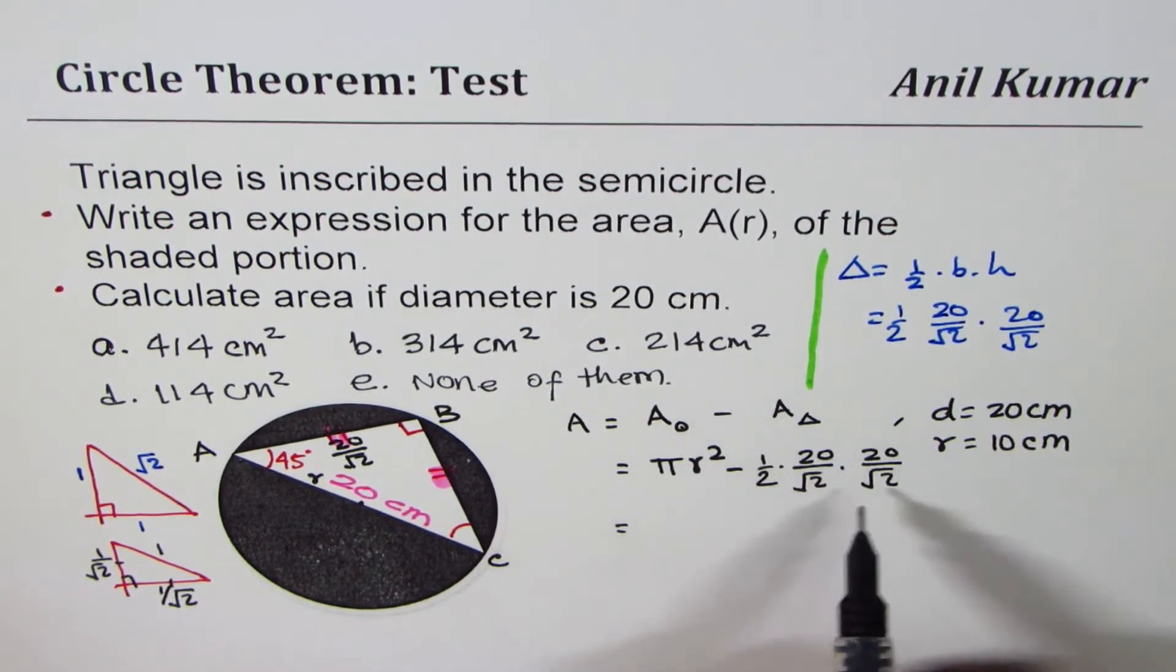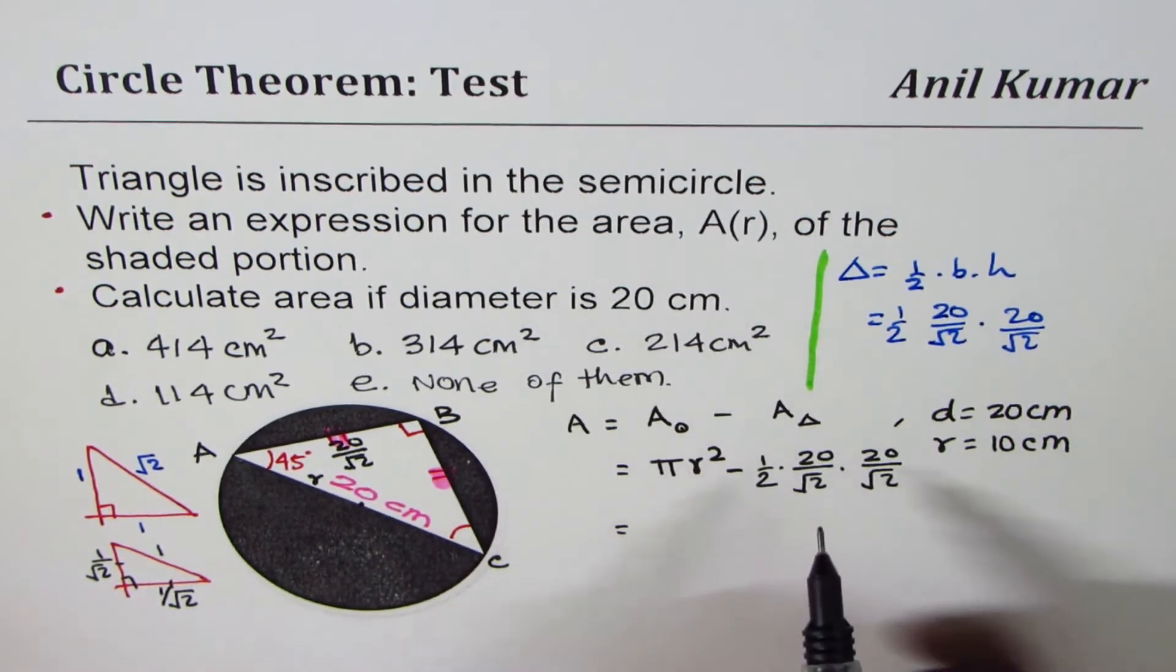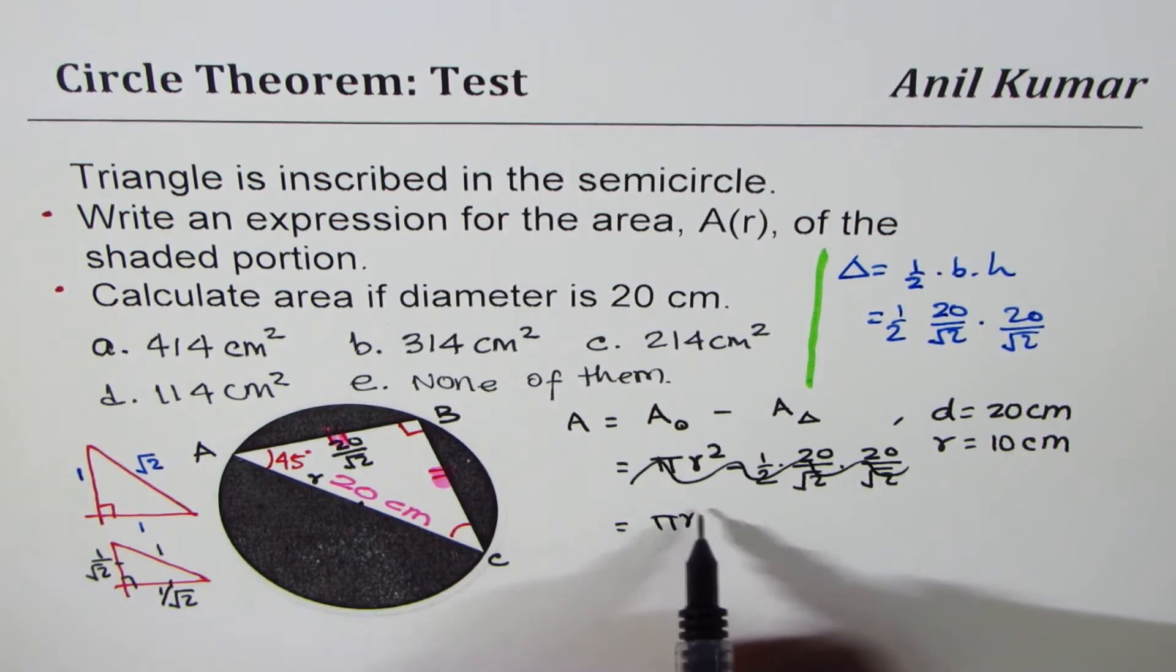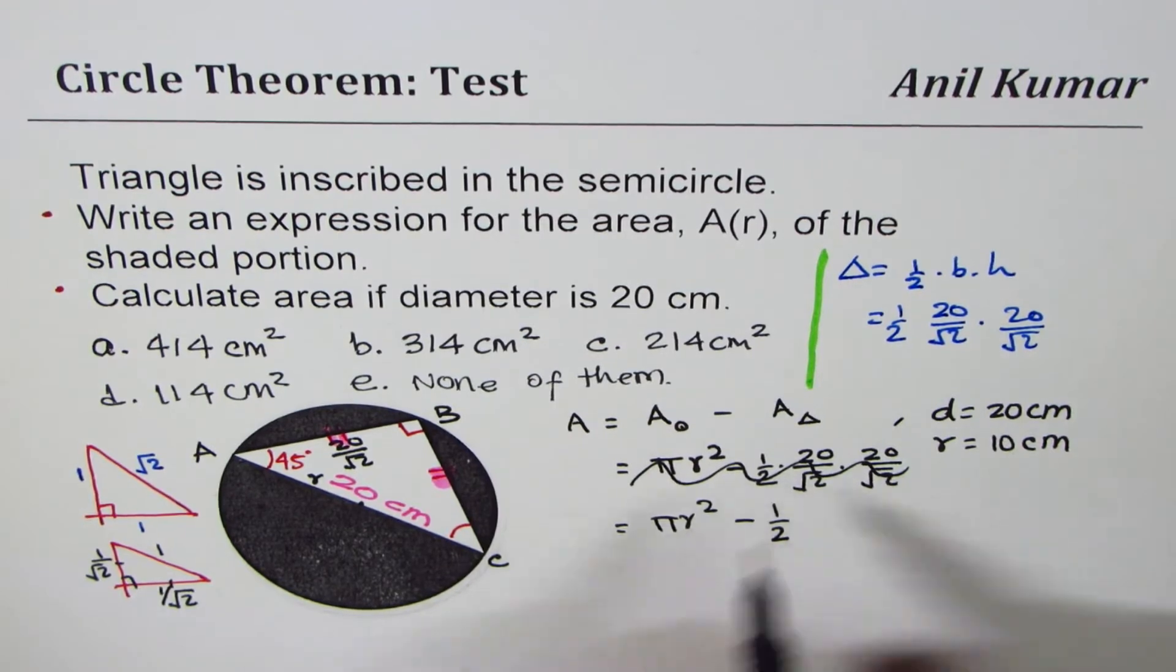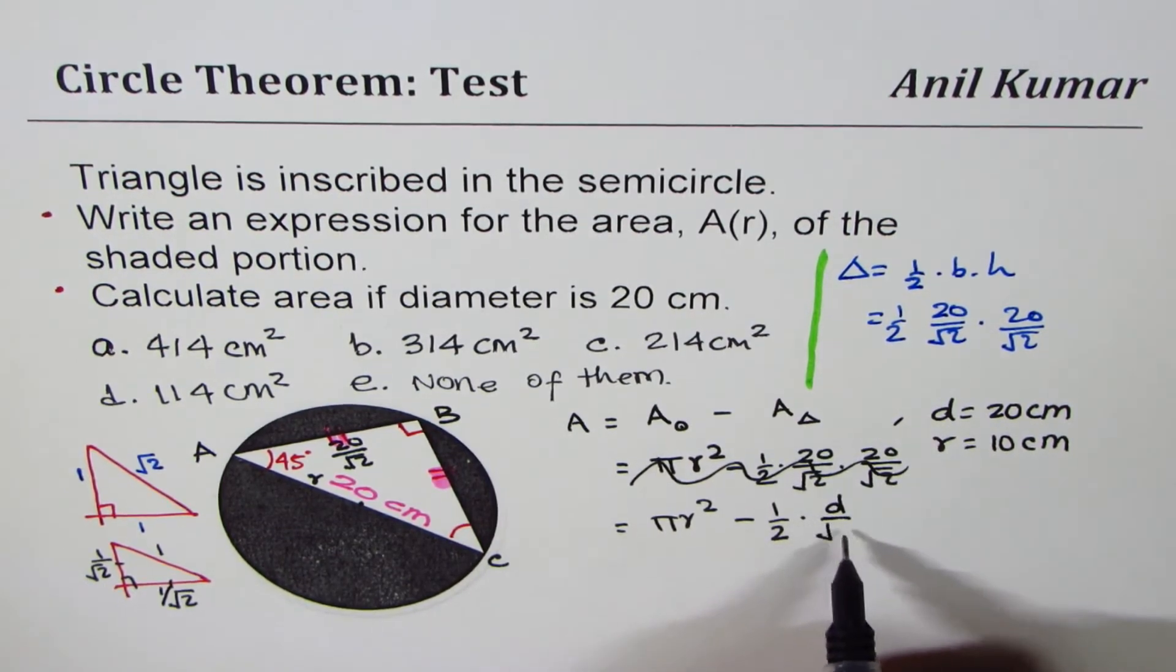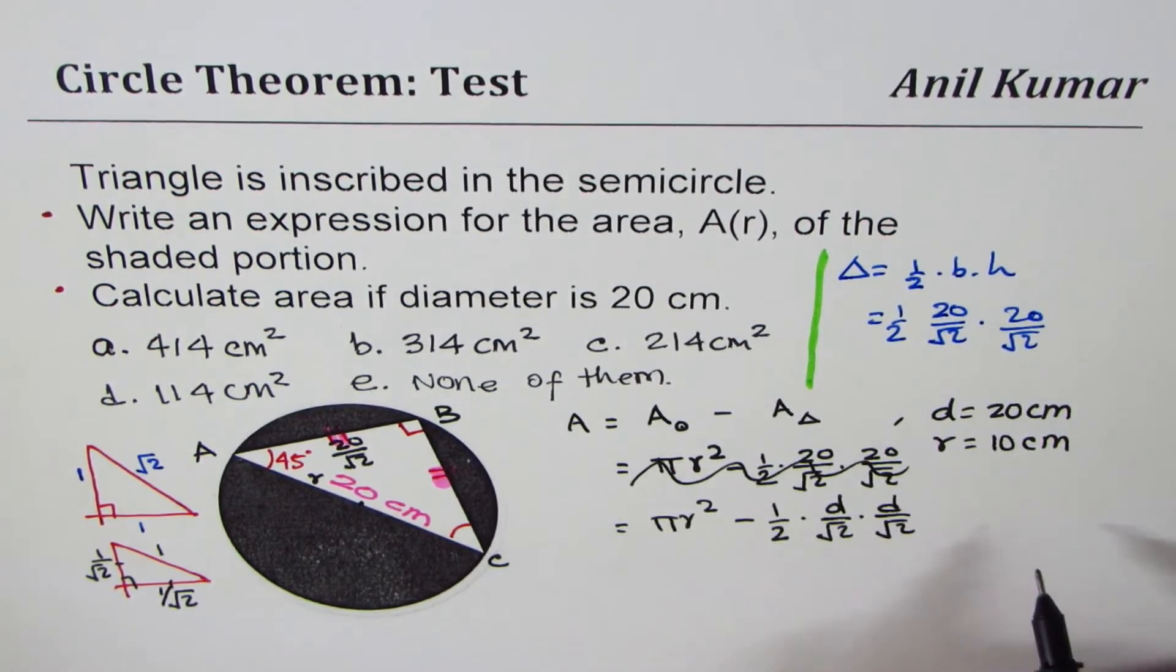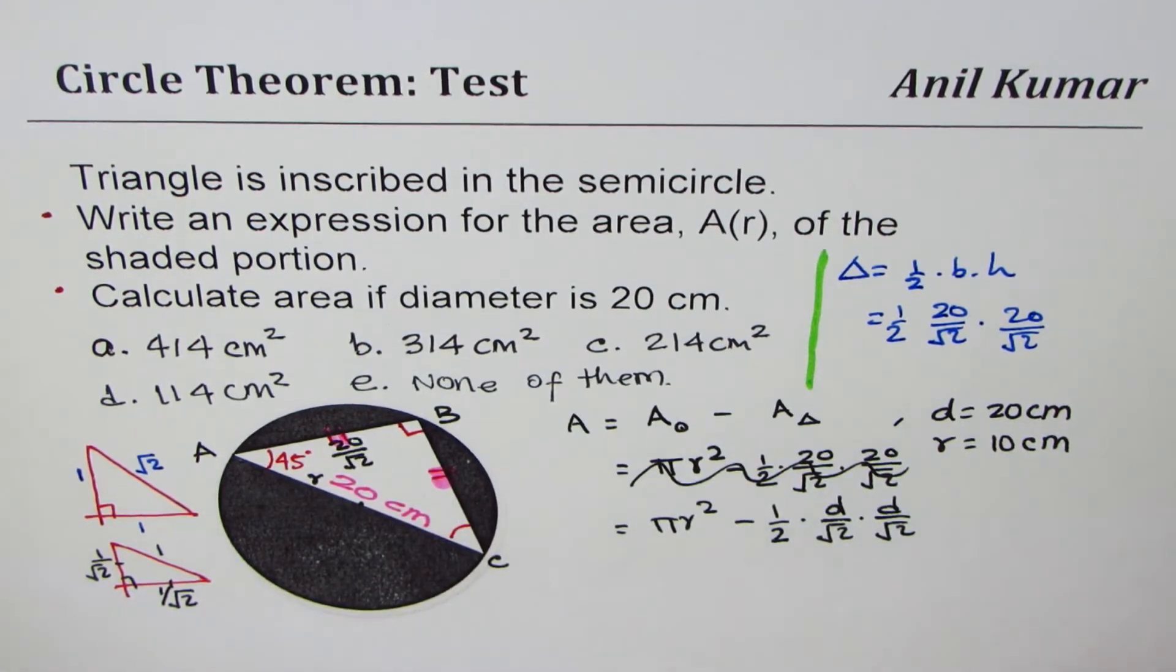In fact, I'm sorry. I just went a step ahead. I should have written an expression for area first. So let's just redo this. So circle area is pi r squared minus area of the triangle will be half. Now, what we were writing was the diameter. So let me write this as diameter over square root 2 times diameter over square root 2. So that is what each side is.